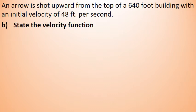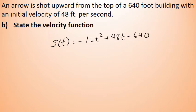Part B asks us to state the velocity function, which allows us to find the instantaneous velocity of the arrow at any point in time as it travels toward the ground. The velocity function is the derivative of the position. The position function from Part A is s(t) = negative 16t squared plus 48t plus 640. A derivative is a rate of change, and the rate of change of an object's position as time passes is the object's velocity. We apply the power rule for differentiation to each term.